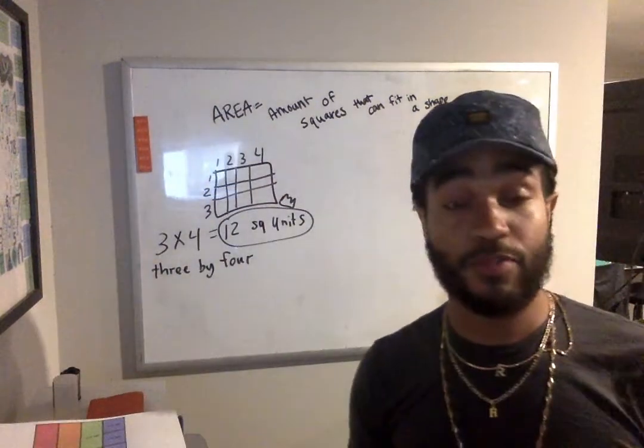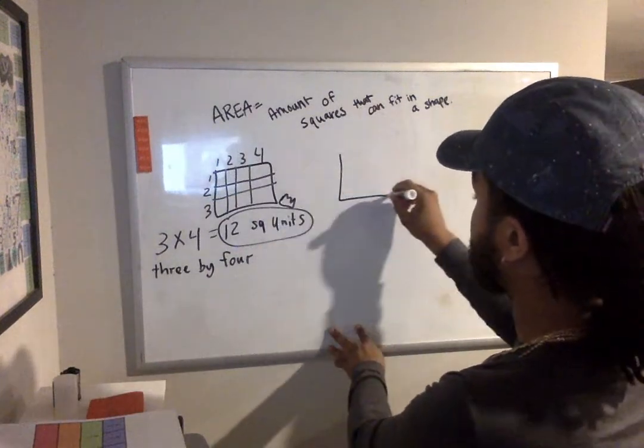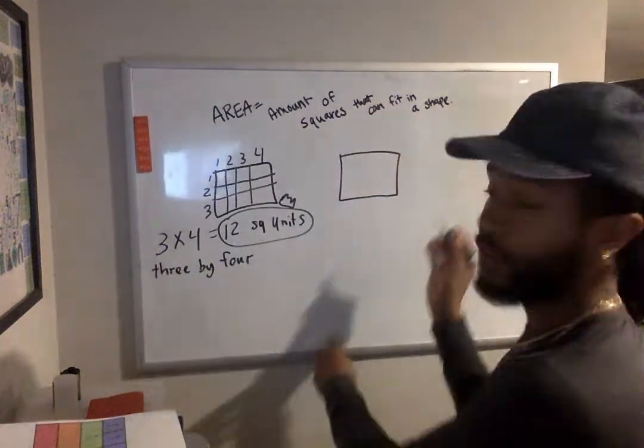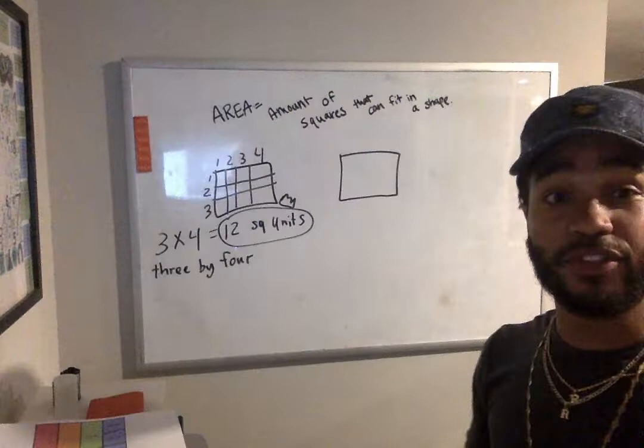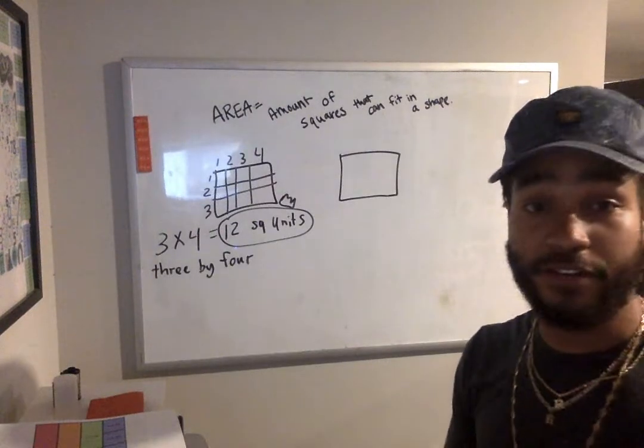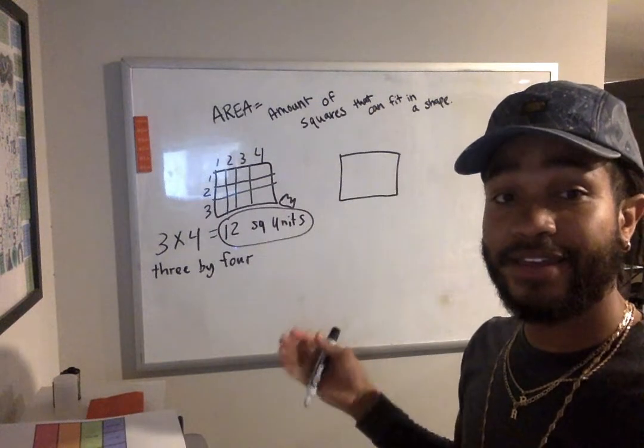Sometimes you might see a shape that looks like this. Looks like a rectangle again. But you may not have the squares on the inside to actually count them up to find the area.